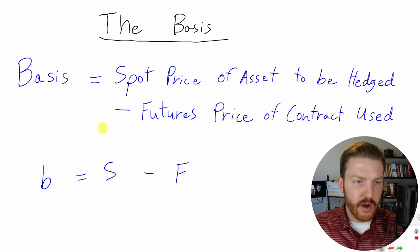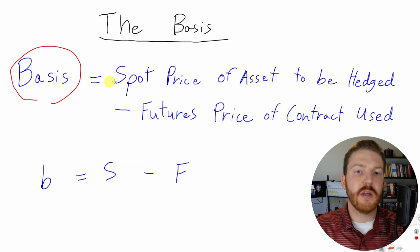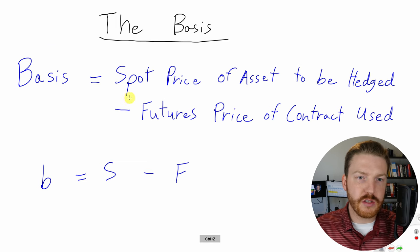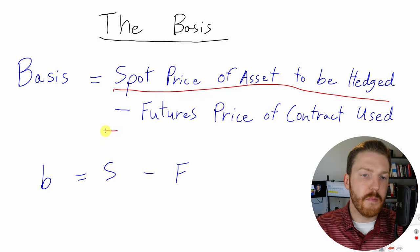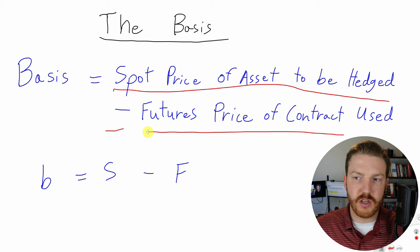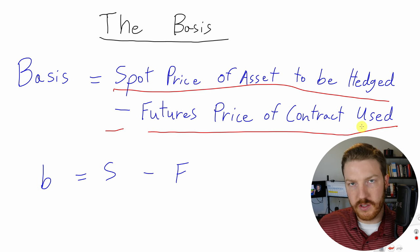In order to define basis risk, we first need to talk about what is the basis. Basis can be described in this formula here. So basis equals the spot price of the asset to be hedged minus the futures price of the contract used to hedge.